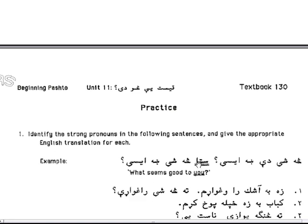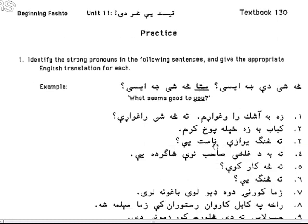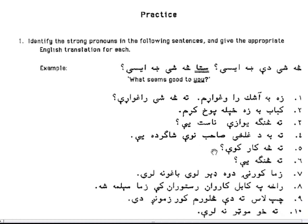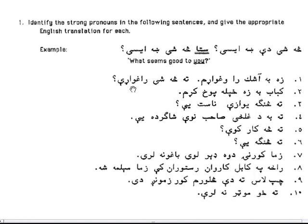Pashto in more than one sense is a pretty accurate language in certain respects. In specific practice, I want you to practice these sentences: Sishay dee kha-ehe, c staa sishay kha-ehe. You're identifying the strong pronouns in the following sentence and giving the appropriate English translation. Sta is a strong pronoun and the English translation is 'you.' Z-ba-a-shak-ra-wa-gwaram. Ta-sa-shay-ra-gwarli. Here, Z- would be a strong pronoun; here, Ta is a strong pronoun. Z- means 'me' and Ta means 'you.'